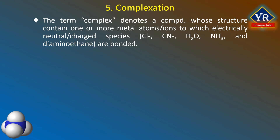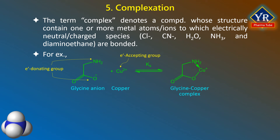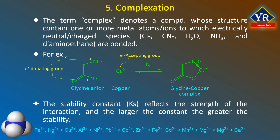Complexation. The term complex is normally used in chemistry to denote a compound whose structure contains one or more metal ions or atoms to which electrically neutral or charged species are bonded — including chlorides, cyanides, water, ammonia, diaminoethane, etc. Complexes or coordination compounds result from a donor-acceptor mechanism — donating or accepting an electron pair — or a Lewis acid-base reaction involving donating or accepting protons. For example, glycine forms a complex with cupric ions, in which two coordinate-covalent bonds are formed. The nitrogen and oxygen atoms of glycine serve as the electron-donating groups, each supplying an electron pair, whereas the cupric ion is the electron acceptor.